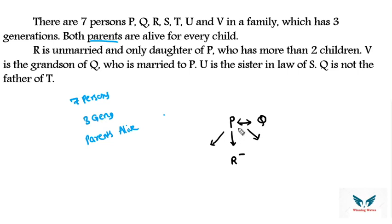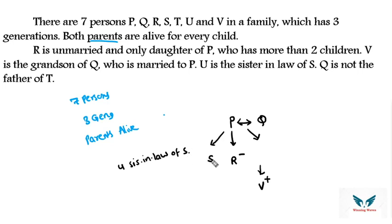V is the grandson of Q — that is two generations down. U is the sister-in-law of S; sister-in-law means brother's wife, so S has a brother and that brother's wife is U — U is female. Placing the family: P and Q are generation 1; their children form generation 2; V is in generation 3. The missing person among P, Q, R, S, T, U, V is T, who is male.